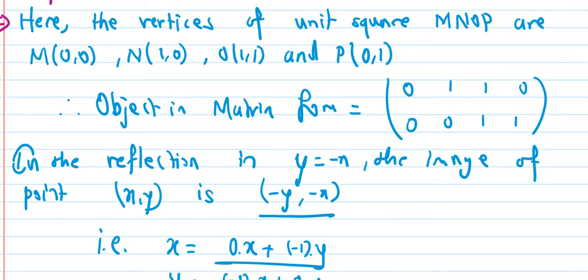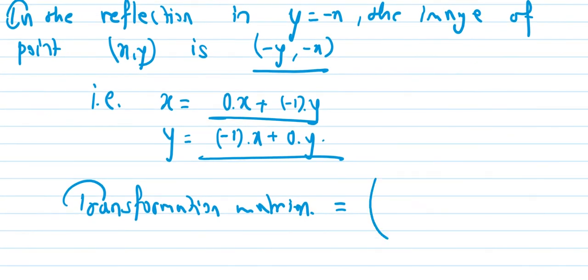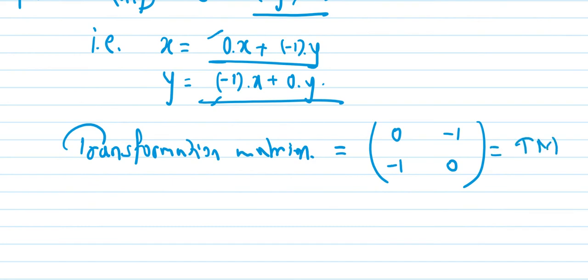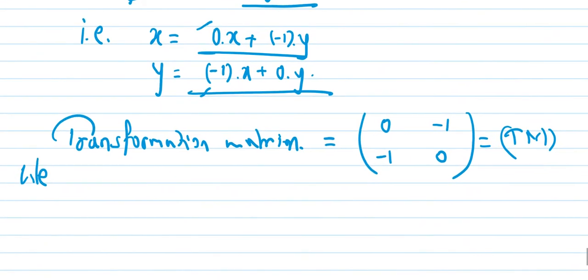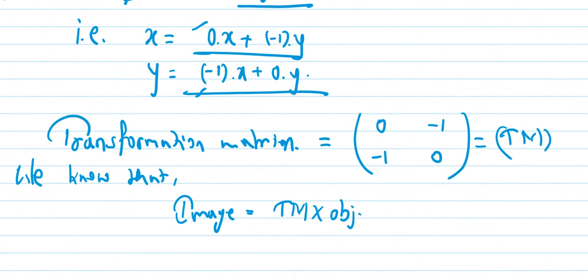We will be using the transformation matrix for y equals to minus x. We know that image equals transformation matrix into object.